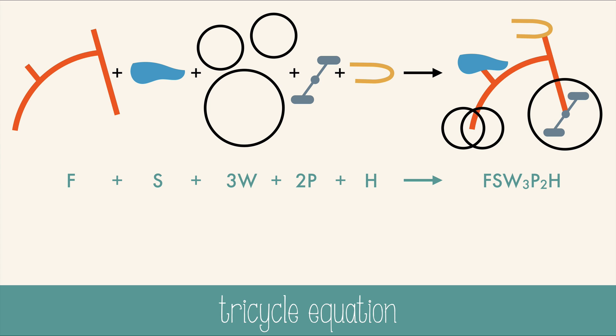Let's try another one. How many pedals do we need if we have 27 wheels? The conversion factor between wheels and pedals is three wheels to two pedals, which can be written two ways.